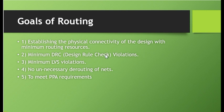Now what are DRC violations? There are certain design rules set by the foundry that ensure that the metals and vias laid out in the design are fabricated properly. Those design rules should be met while routing the design. If they are not met, then we get DRC violations — design rule check violations. For example, minimum spacing, minimum area, maximum area, etc. are examples of DRC violations.